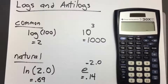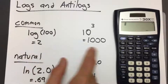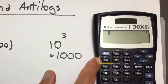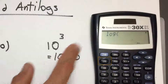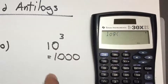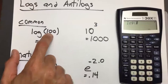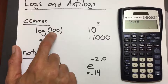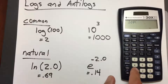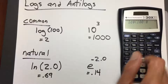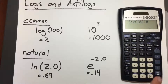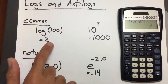We'll begin with the TI-30X2S. To take the common log, we look for a button on the calculator that says LOG. That's here in the upper left — we'll press it. It gives us LOG with open parentheses. We enter the number we are trying to take the log of, so we'll say 100, close the parentheses, and press enter. That gives us 2, which is the right answer.